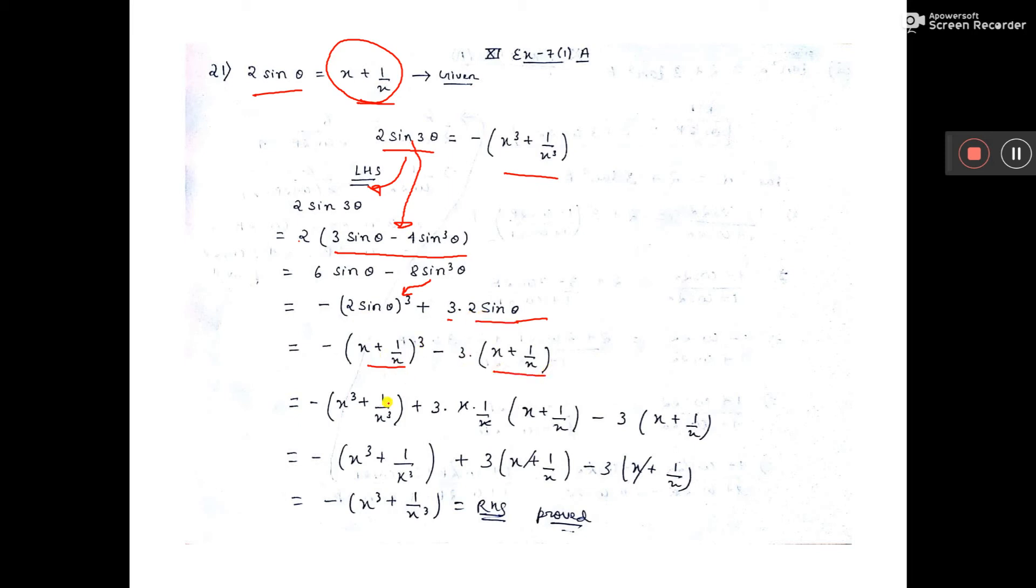Now a plus b whole cube formula: a cube plus b cube plus 3ab into a plus b. Here minus sign is there. This boy has not given bracket but you have to give here. Then you see, if you remove this,